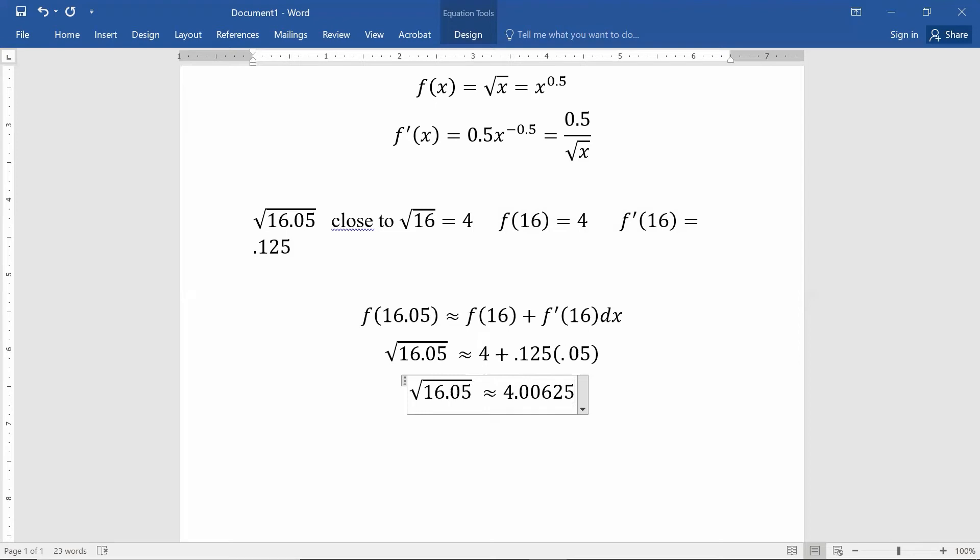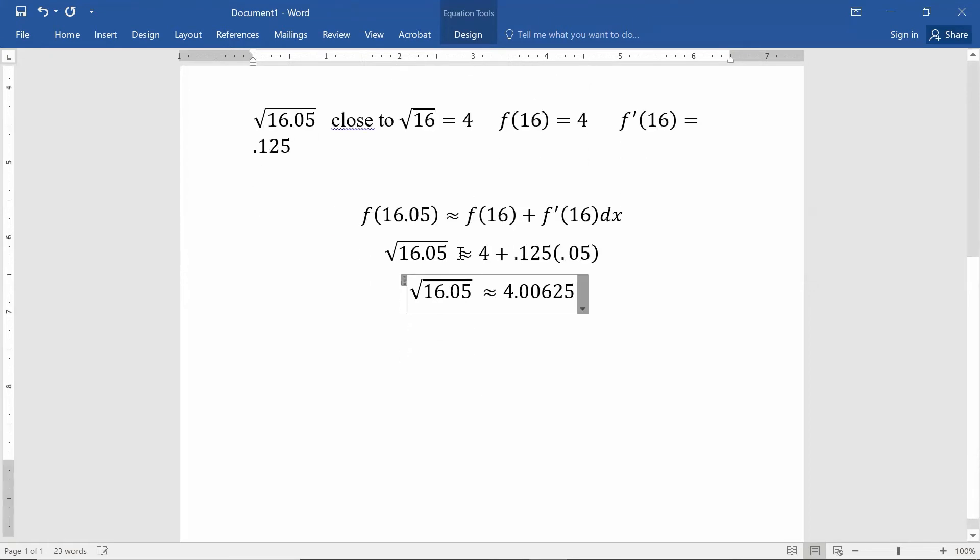I believe. And again, you can type this into your calculator to confirm that you get something very, very close to that. And in fact, you do. So 4.00625 is exactly what your calculator will give out if you round to five decimal places. If you round it to more, obviously you can go out to more.